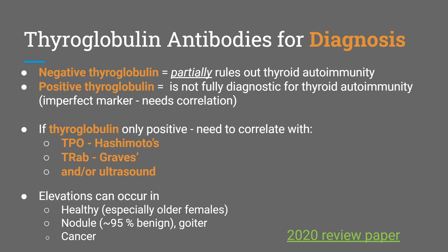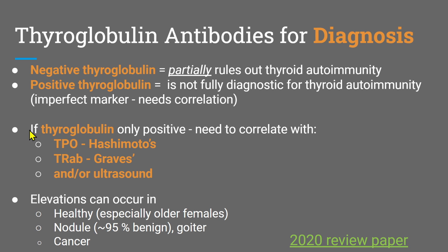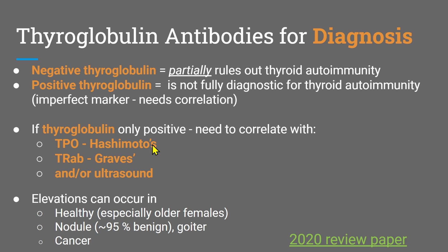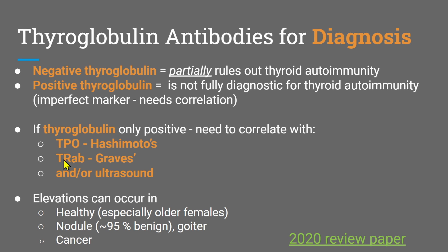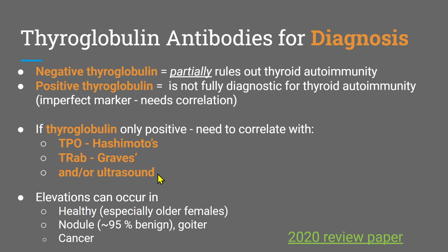If your oncologist wants you to do this study, don't ignore it, but this is to help contextualize. If you've had a thyroid panel screening for thyroid autoimmunity and the only marker positive was thyroglobulin, then you want to be bridled with how quickly you're jumping to a diagnostic conclusion, whether for autoimmunity or cancer. A negative thyroglobulin is not diagnostic, nor is a positive. A negative can partially rule out. A positive must be correlated with TPO for Hashimoto's and thyroid receptor antibody for Graves, plus or minus ultrasound.